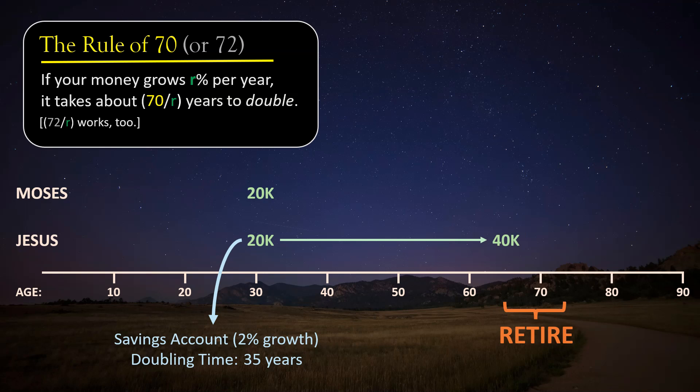But while Jesus saves, Moses invests. 30-year-old Moses opens a brokerage account and puts his $20,000 into the stock market, where it grows at 9% per year. Okay, 9% is bigger than 2%, so that seems good, but how much difference can it really make, you might ask. I mean, they're both one-digit numbers, so sure, maybe Moses will make a bit more money, but will it be significantly more? Yes, it will, and the Rule of Seventy will show us why.